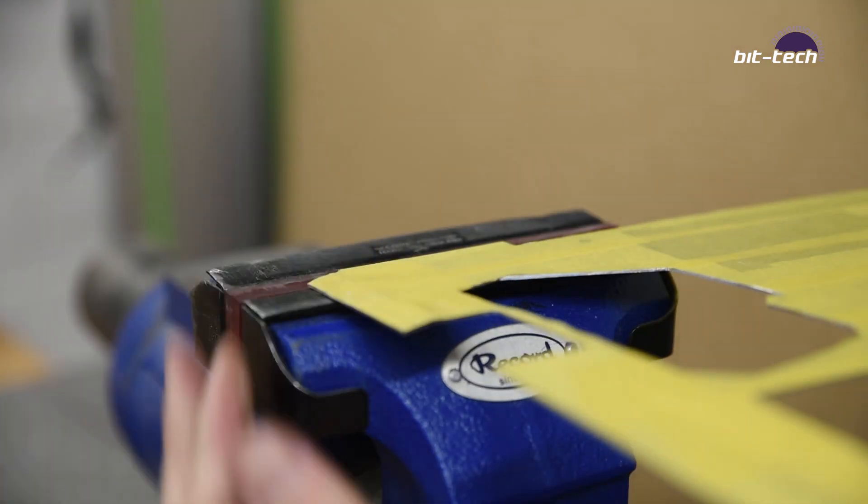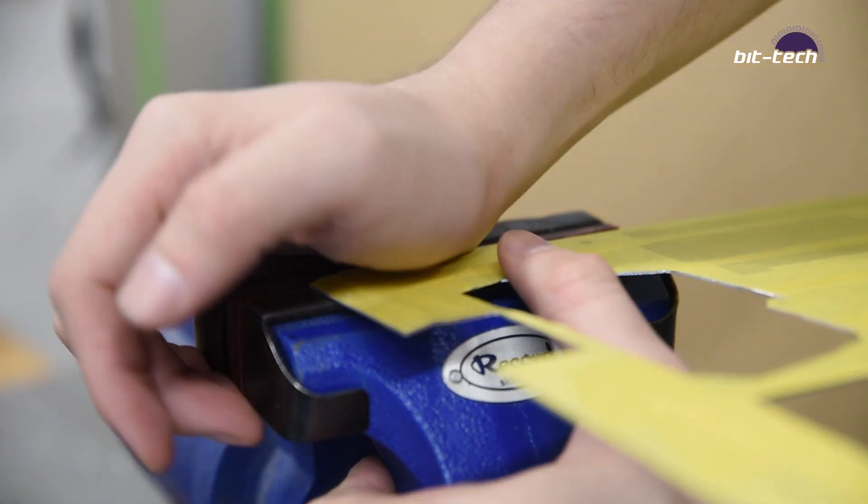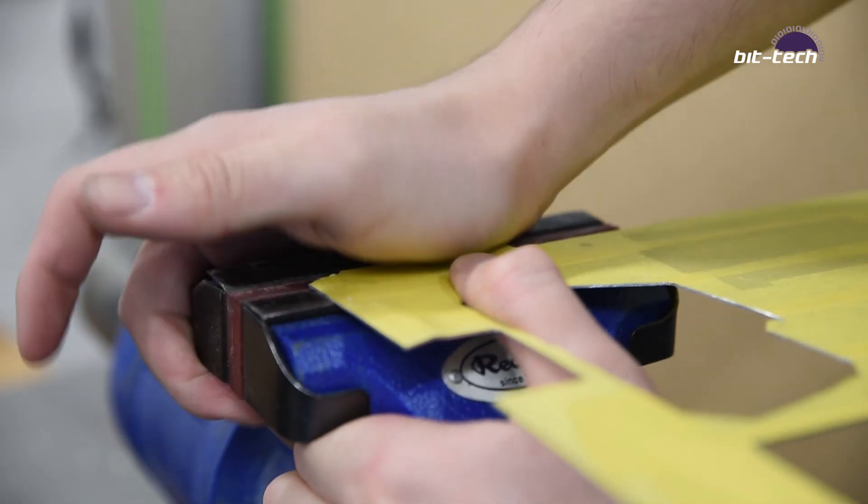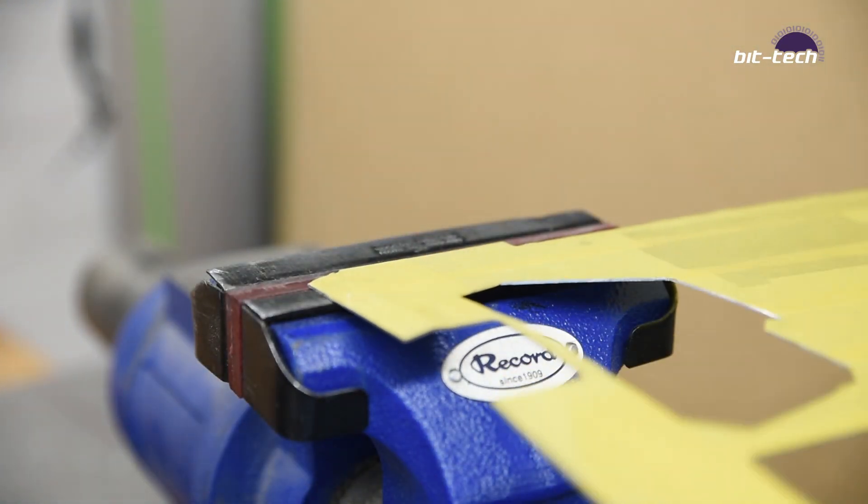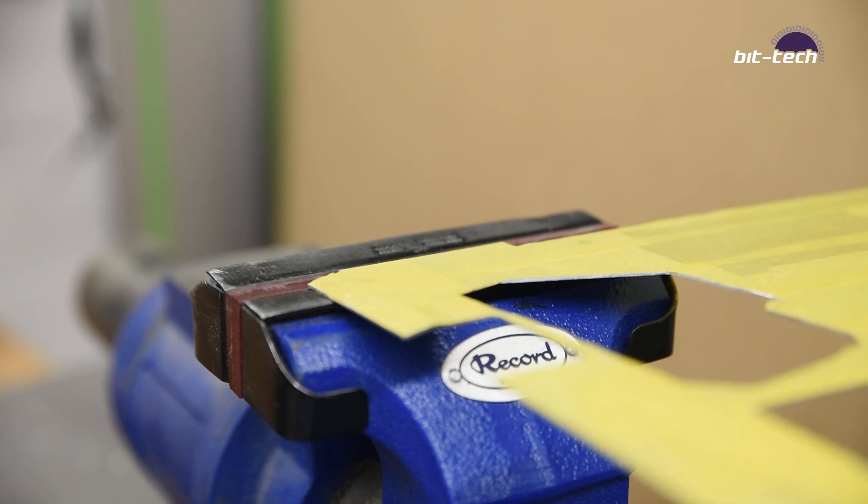Now be careful not to overdo the bends. Aluminum doesn't bend so smoothly and will succumb to stress fractures if you work it back and forth. I'm bending along the lines cut on the machine to help this. Think of bending a scored sheet of paper.